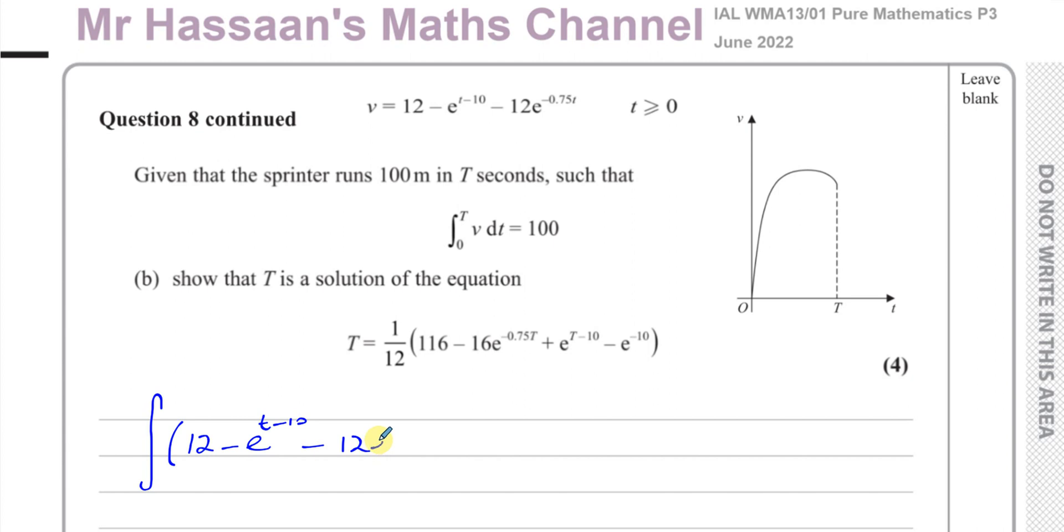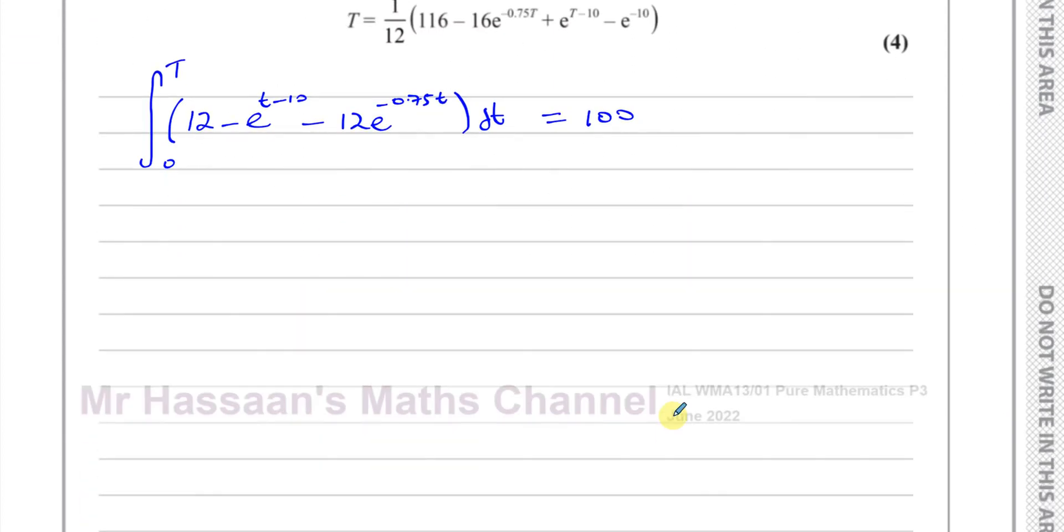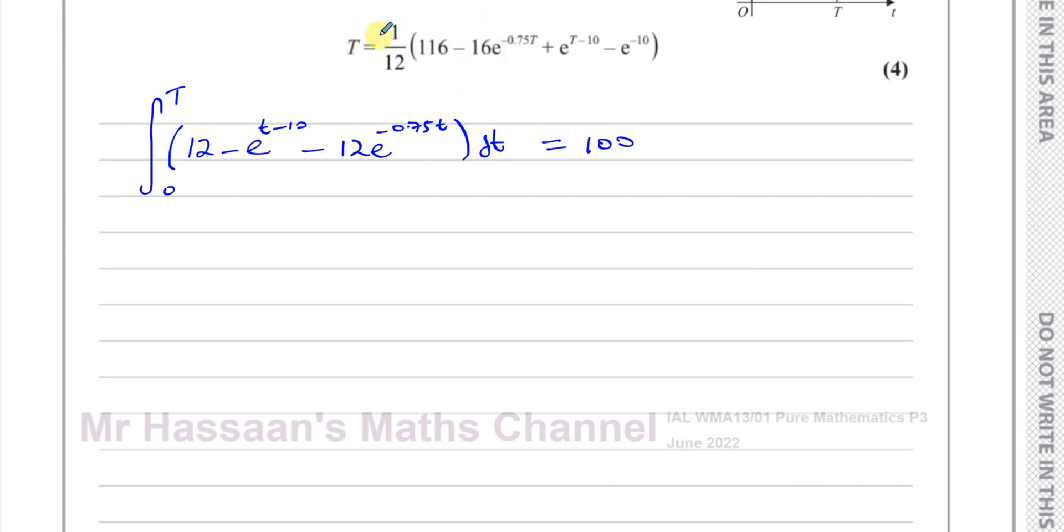Minus 12 times e to the power of negative 0.75t with respect to t between the limits of 0 and capital T. My answer has to become out as 100. So if I now integrate this and resolve it for T, I should get this expression over here.